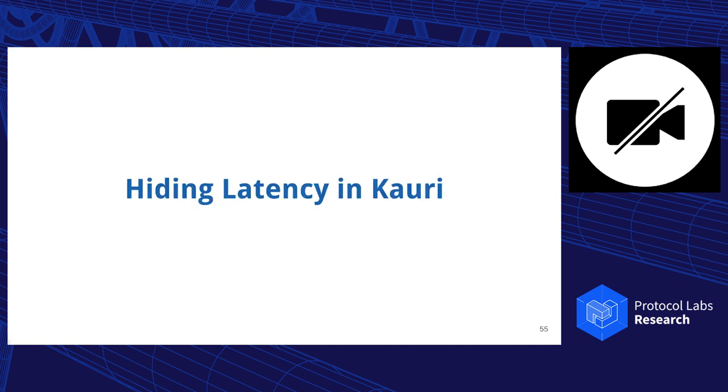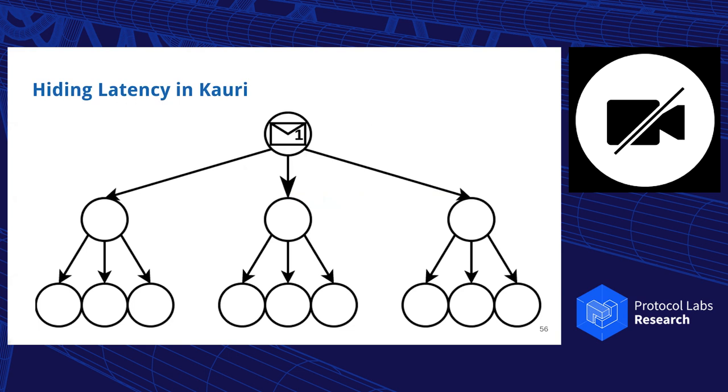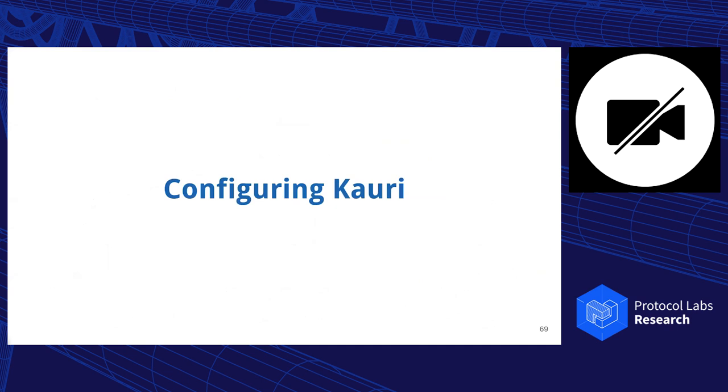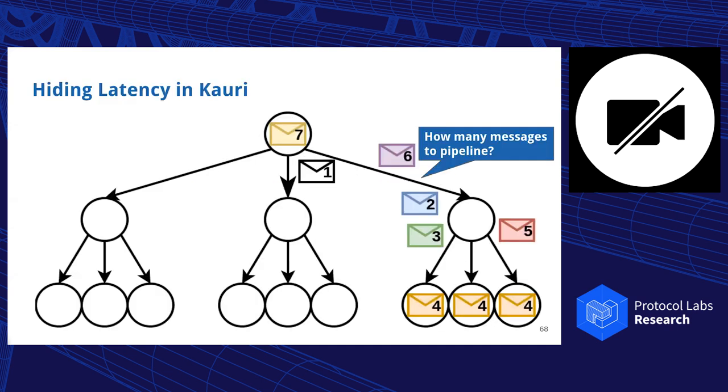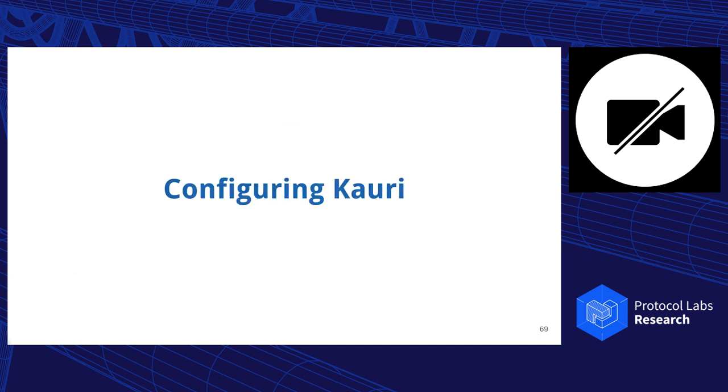In terms of latency, we do a similar approach as HotStuff does for their problems, but we extend it further. As the leader sends the first message out, the leader already knows the hash of the previous block. So the leader can also construct the second block and the third block, and in the meanwhile, pipeline several blocks optimistically through the system. The problem is how many messages can we actually pipeline?